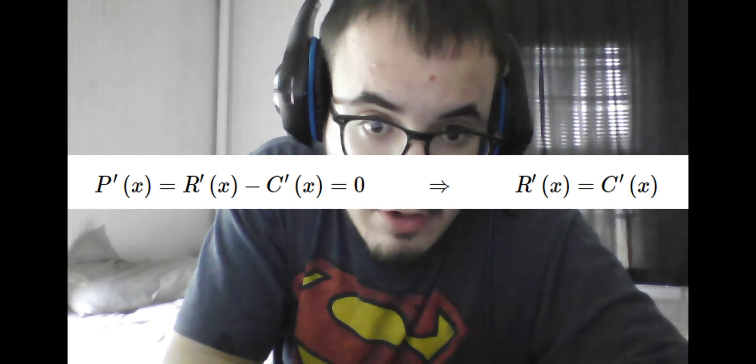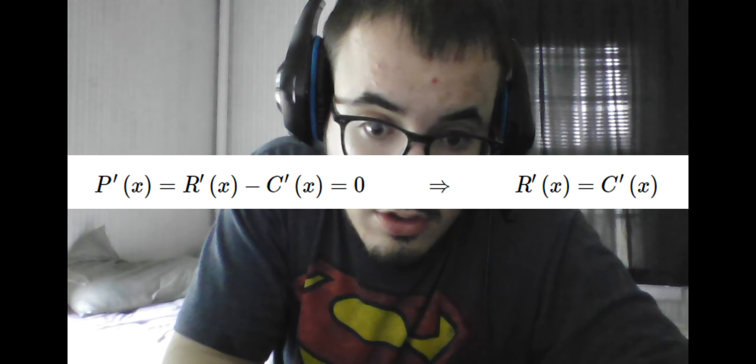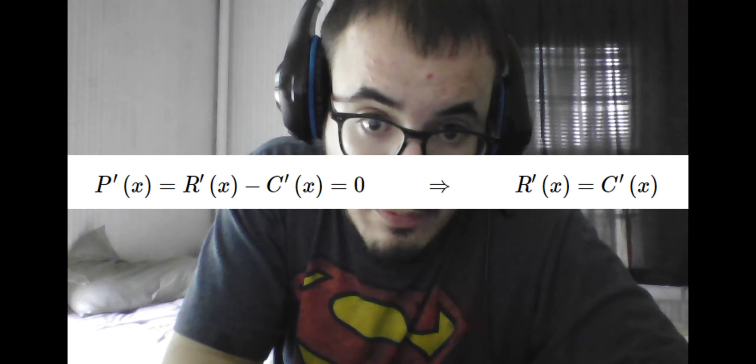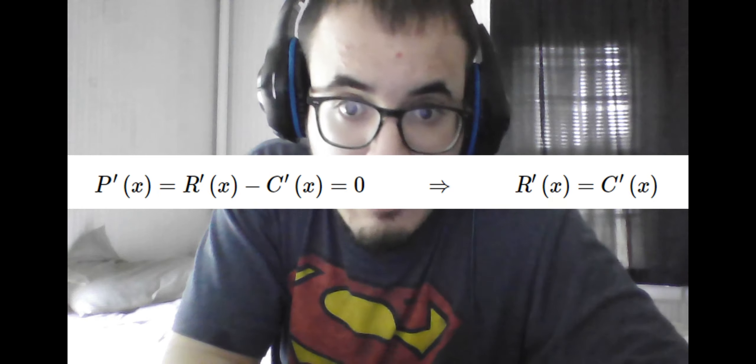Which means, because the derivative of profit is derivative of revenue minus derivative of cost, this will be maximum when the derivative of the revenue equals the derivative of the cost. And we know by...